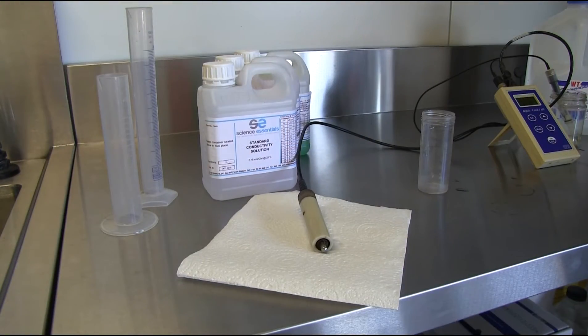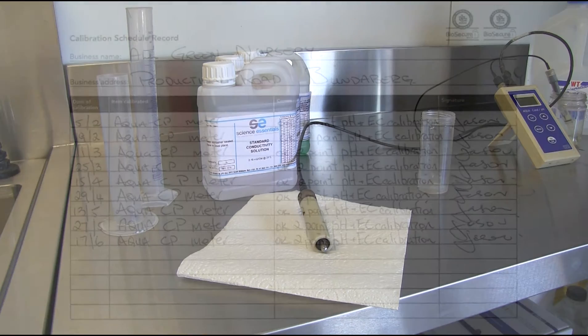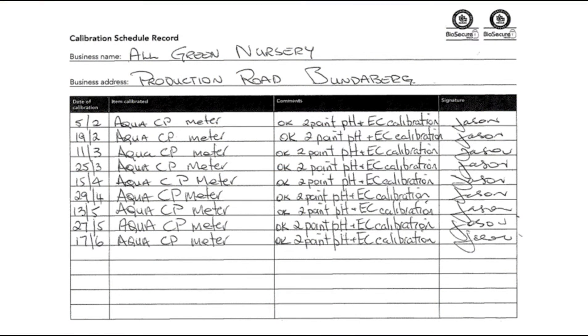For a zero EC calibration, allow the sensor to air dry and calibrate as per manufacturer's directions. At the completion of calibrating the meter, record the results.